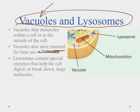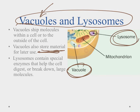We also have the lysosome, which you can see right here. The lysosomes contain special enzymes that help the cells digest or break down large molecules and toxic molecules. So vacuoles are for storage, and lysosomes — while they are for storage in a sense — they also break down the larger molecules.